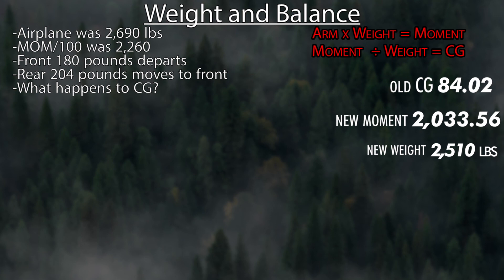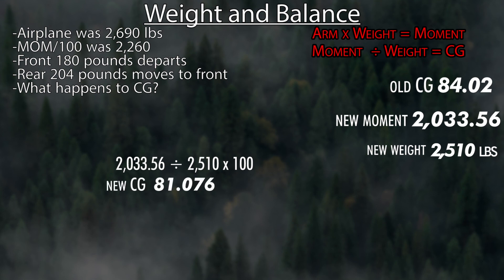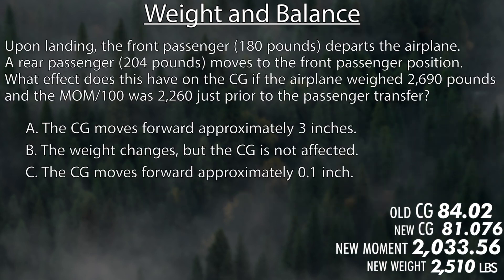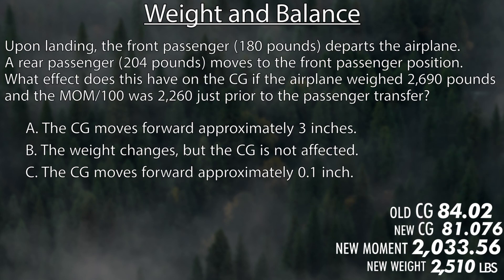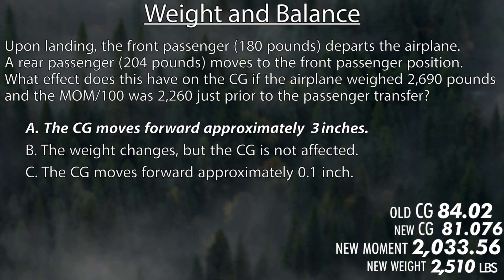We know our new weight and our new moment, so let's find the new CG. Take the moment of 2,033.56 divided by the weight of 2,510, then multiply by 100 since everything is divided by 100. Our new CG is 81.076. So the old CG was 84, the new one is 81 — it moved forward 3 inches.